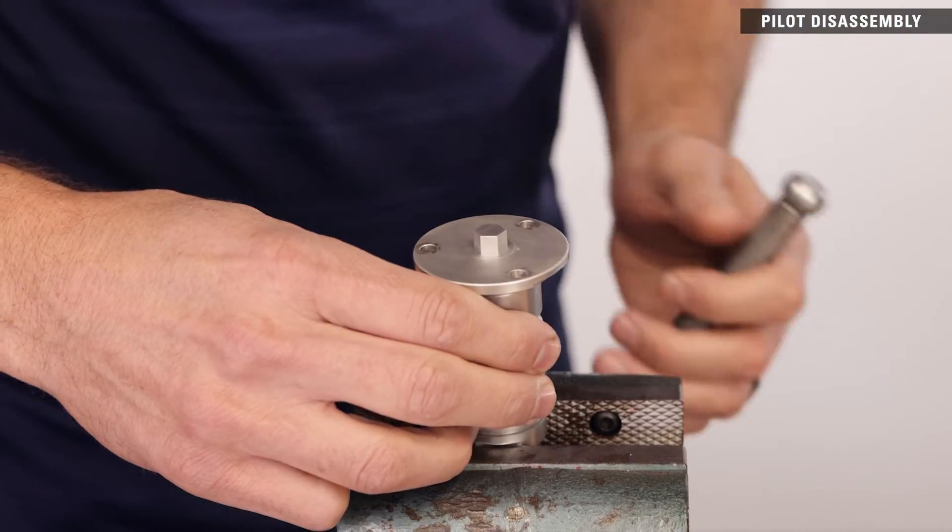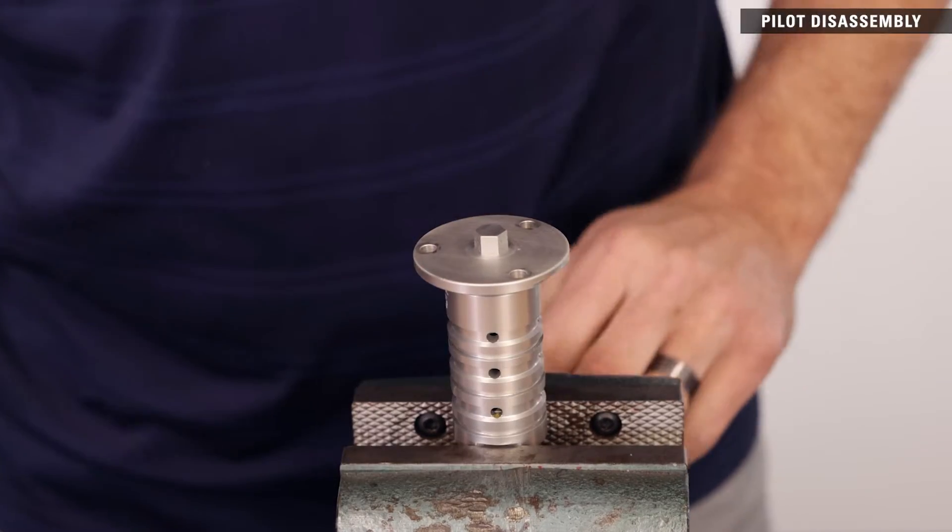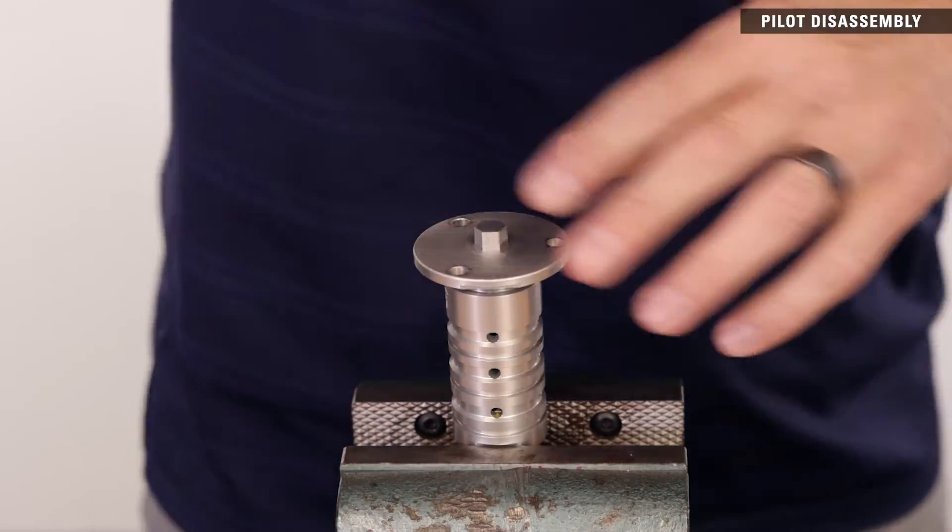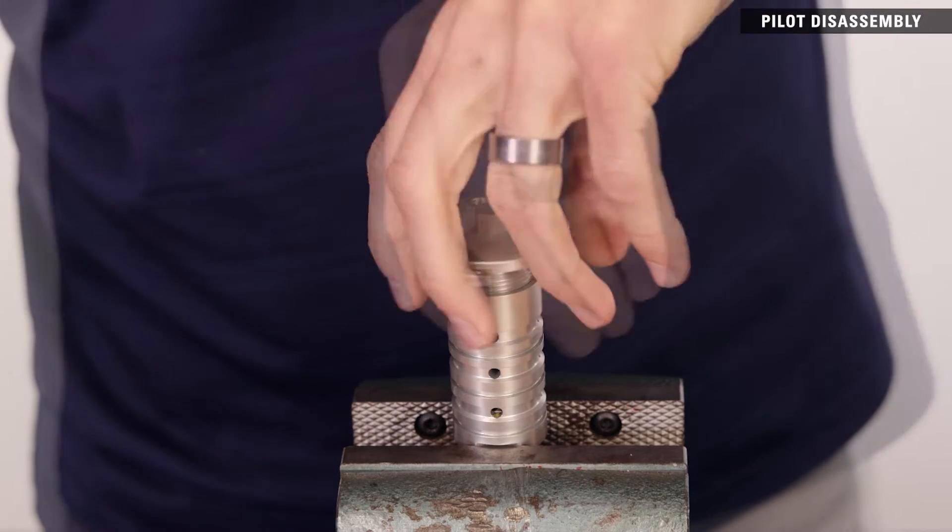Place the flats of the lower pilot cartridge into a vise or hold it in place with a wrench. Unthread and remove the flange top pilot cap with a 3-8 inch or adjustable wrench.